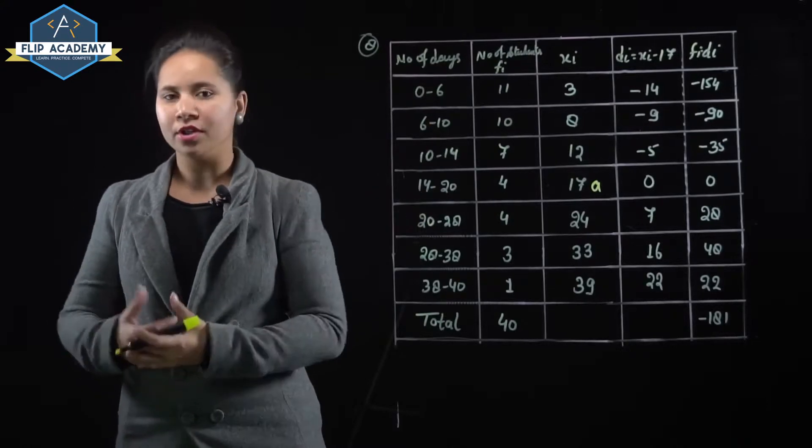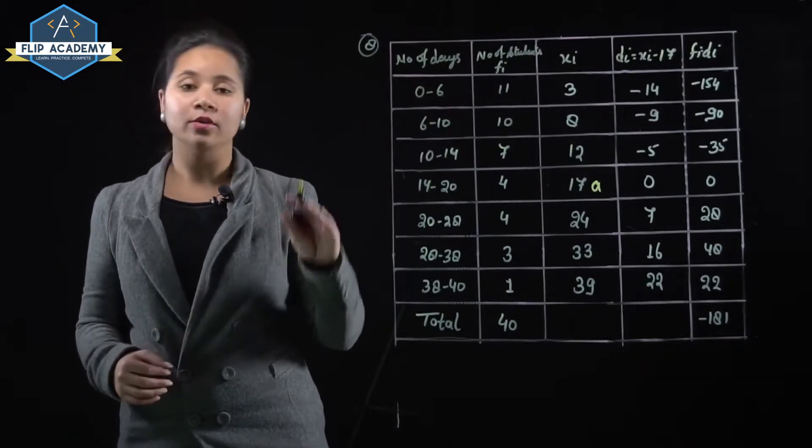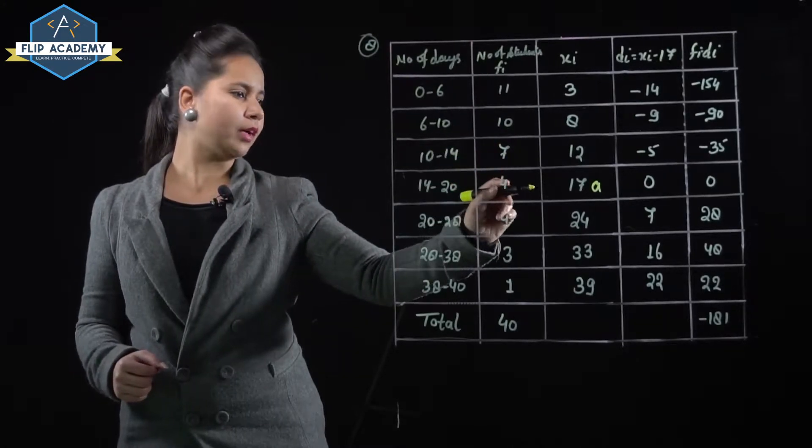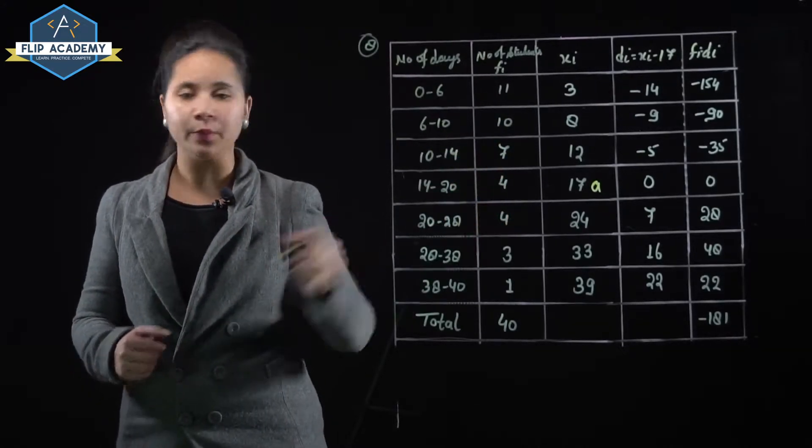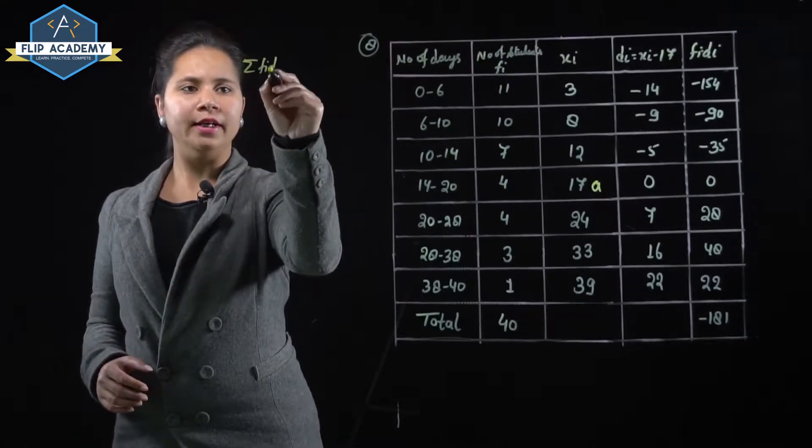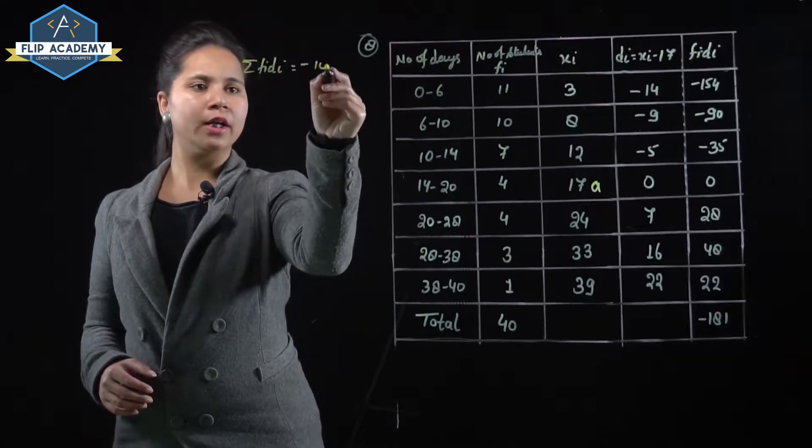So deviation has been obtained. Now fi into di: minus 154, minus 90, minus 35, 0, 28, 48, and 22. Sum of fi di equals minus 181.